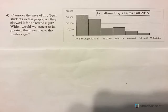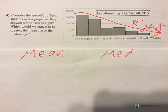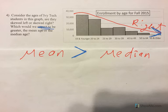The last one on this page: consider the ages of Ivy Tech students in this graph. Are they skewed left or skewed right? Look at the tail — they are skewed to the right, because it's tailing off to the right. So what would we expect to be greater, the mean or the median? Remember, if it's skewed right, the arrow points to the right, meaning the mean would be greater than the median. That's an expectation — it doesn't mean it's always true — but we would expect the mean to be greater than the median.